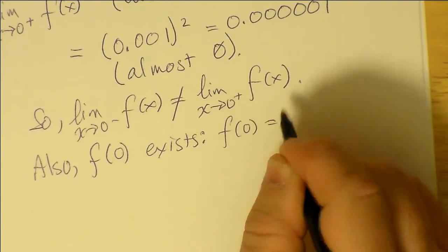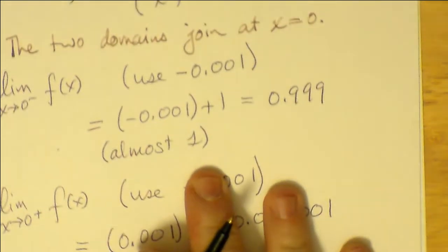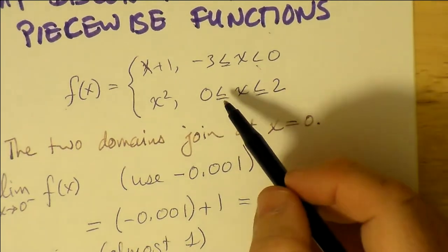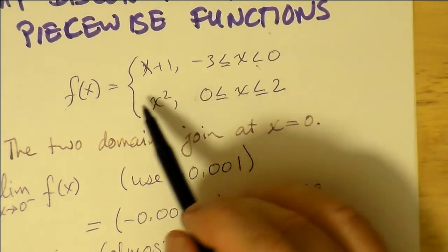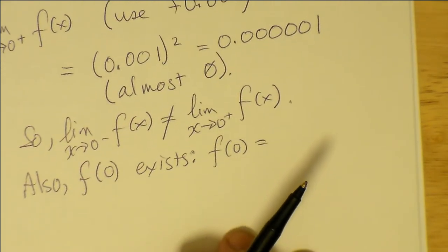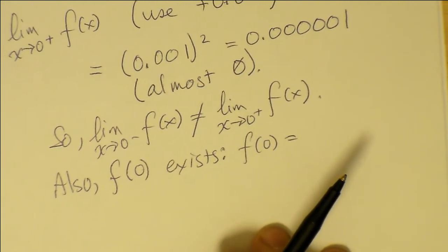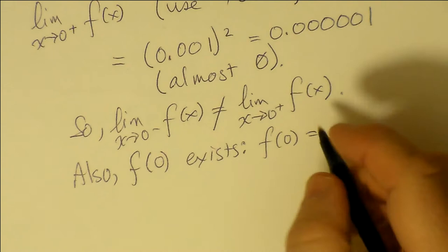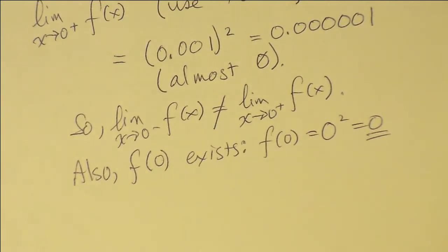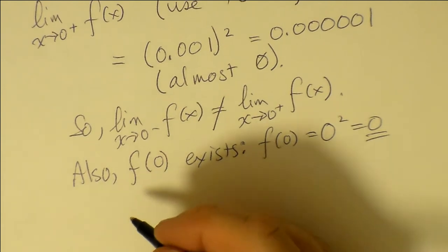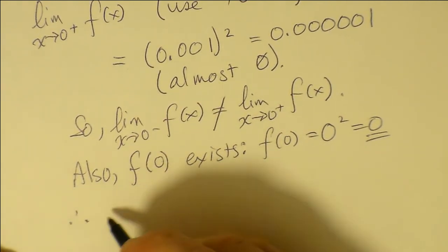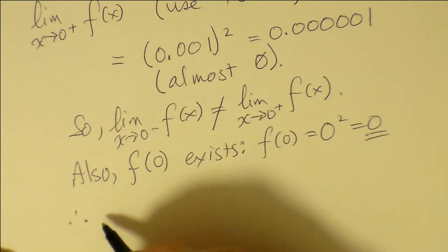And so f of 0, how about f of 0? Well, f of 0, if we plug it in, we have to apply the part that 0 is part of the domain of, and that's the second piece of the function. And so we have to plug in 0 in x squared. And so then we just write down 0 squared, which is just 0, and notice that's more equal to the right side than it is to the left side.